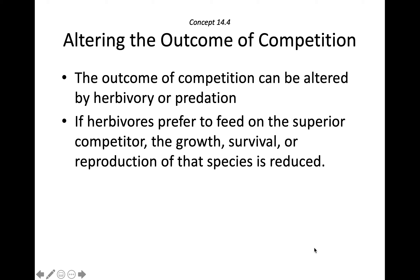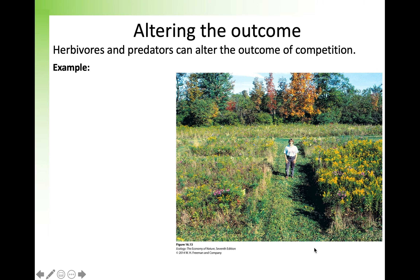Biotic interactions can influence competition as well — things like herbivory or predation. If herbivores prefer to feed on the superior competitor, the growth, survival, or reproduction of that species would be reduced, which would be good for the inferior competitors. Herbivores can remove a dominant plant competitor, allowing other species to survive.